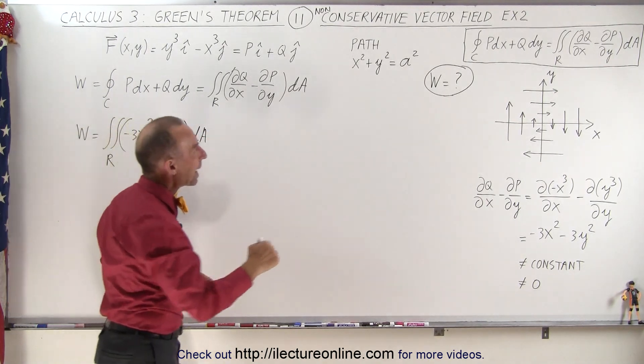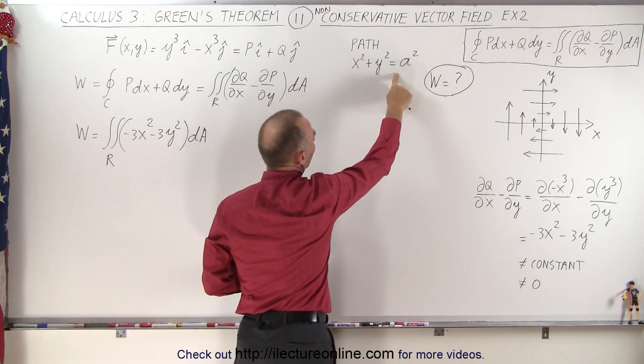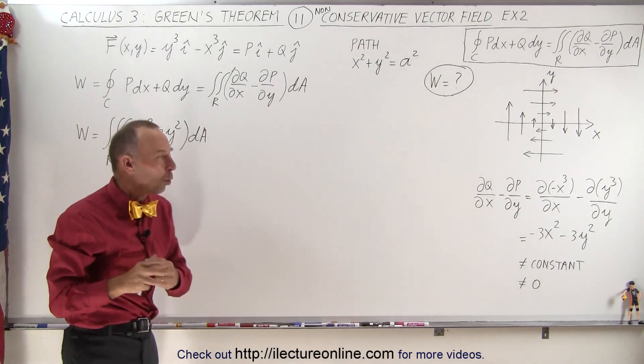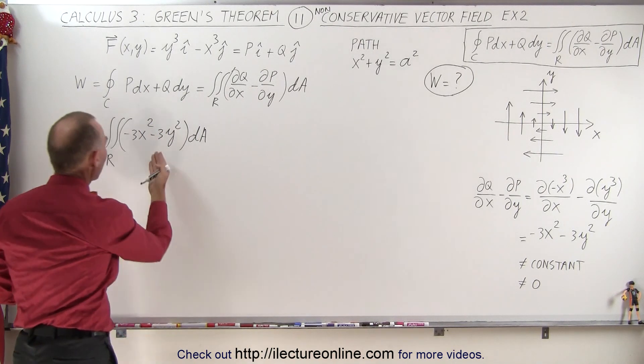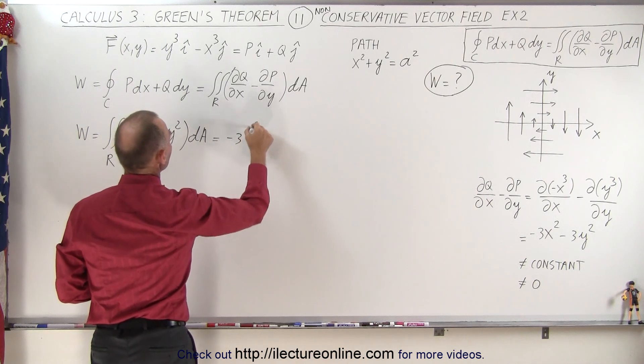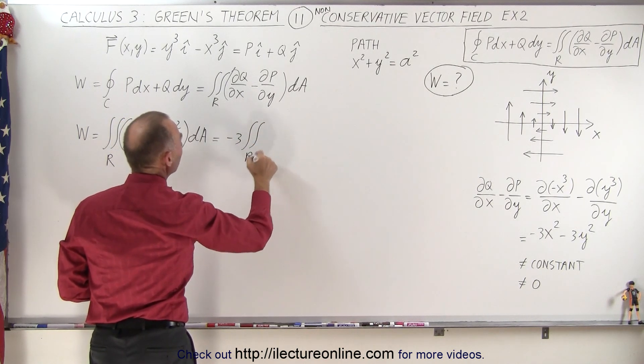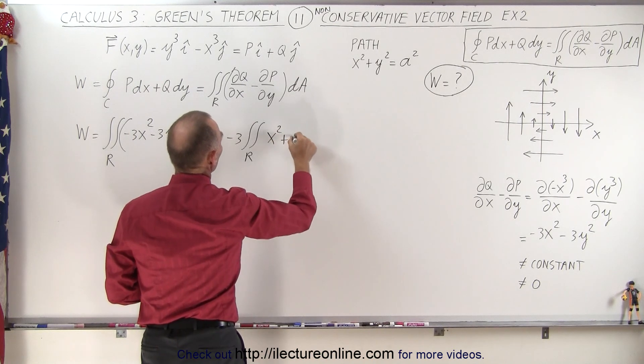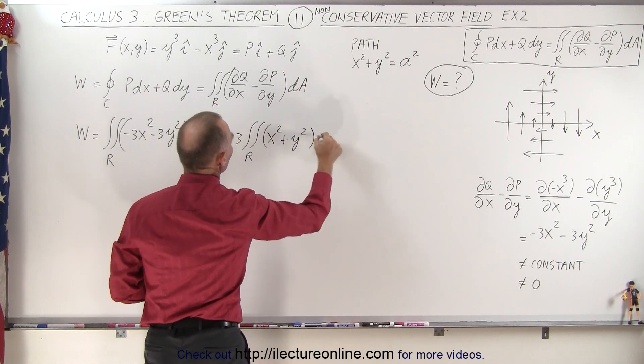But again, since the path is along a circle defined right here, x squared plus y squared equals a squared, we can use polar coordinates. We can factor out a minus 3, so let's do that. So this is equal to minus 3 times the double integral over the region enclosed by a circle of x squared plus y squared times dA.